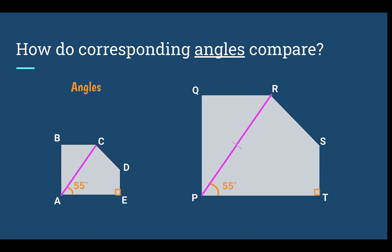Corresponding angles are the exact same. Whatever the angle was on the first shape, it should be the same on the second shape. So if angle C was 135 degrees on the original shape, the corresponding angle — angle R — should also be 135 degrees. Angle D was 125 degrees, so the corresponding angle, S, should also be 125 degrees. Corresponding angles are equal.